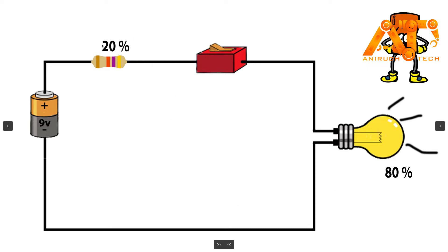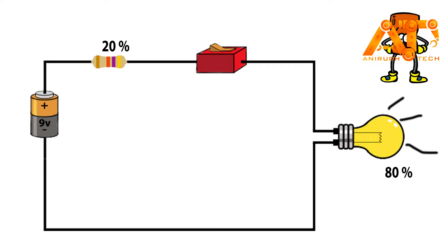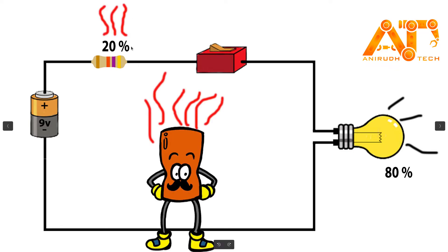Let's say 20 percent of our energy is consumed by the resistor and the remaining 80 percent by our bulb. The question is: where does the 20 percent of our energy go? It is dissipated as heat. So this is not a good way for controlling brightness, since we are wasting energy.